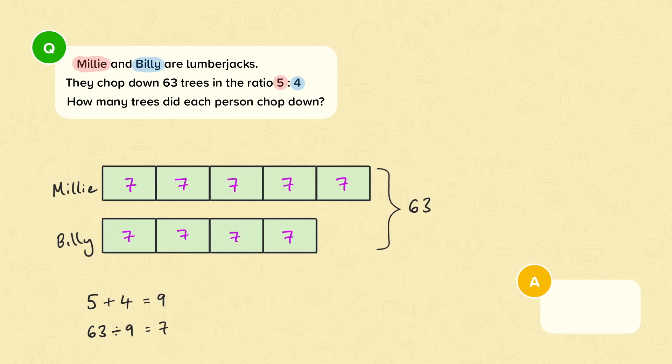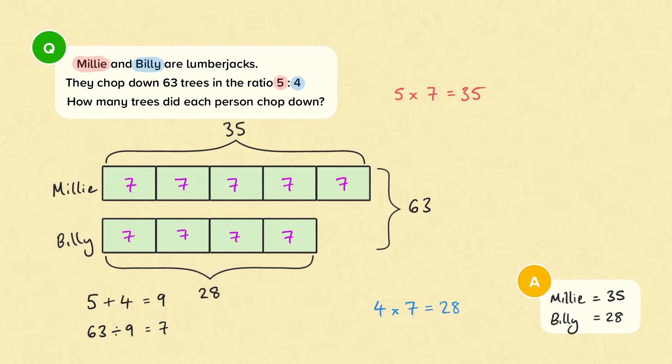We can now work out how many trees each person cut down. Millie has five parts in the ratio. These five bars are the same as five multiplied by seven, which is 35. So Millie cut down 35 trees. Billy has four parts in the ratio. These four bars can be worked out by doing four multiplied by seven, which is 28. Millie cut down 28 trees. We've now worked out how many trees each person has cut down.